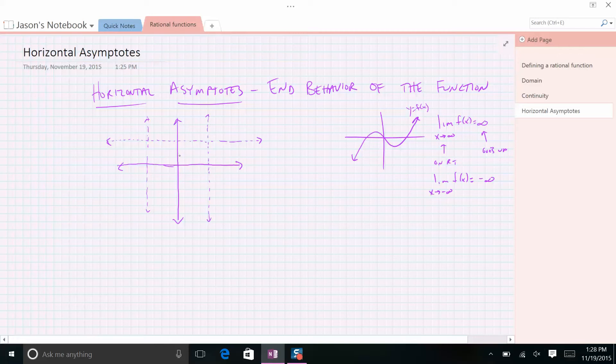So this graph could look something like this. This is a possible rational function graph, okay? This one is the horizontal asymptote.